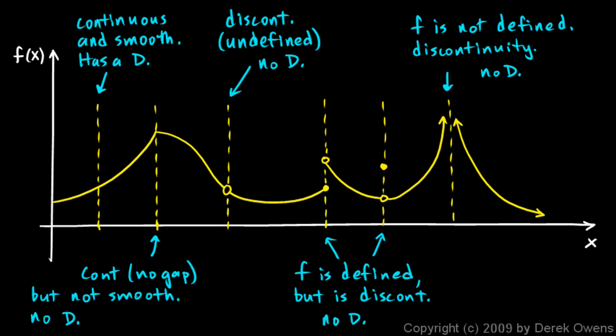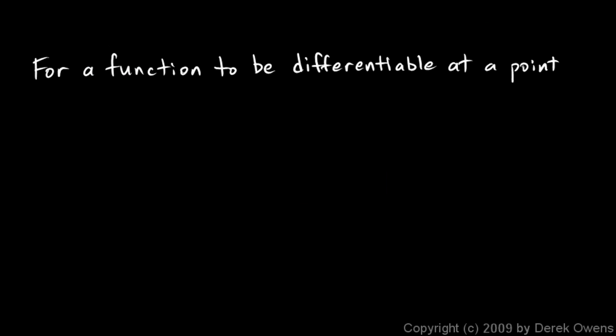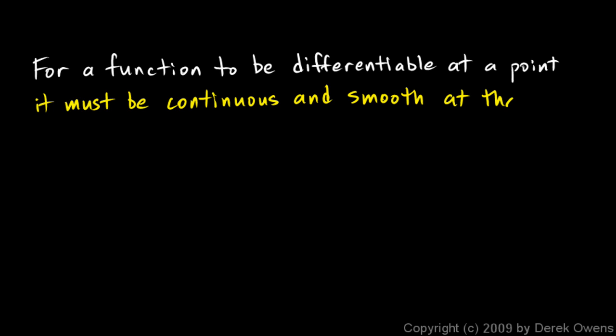Those ideas should make sense to you. If the derivative at a point is the slope of the graph at that point, the function has to have a well-defined slope there, and in order to have a well-defined slope, the function has to exist at that point. So we can complete this statement: for a function to be differentiable at a point, it must be continuous and smooth at that point.